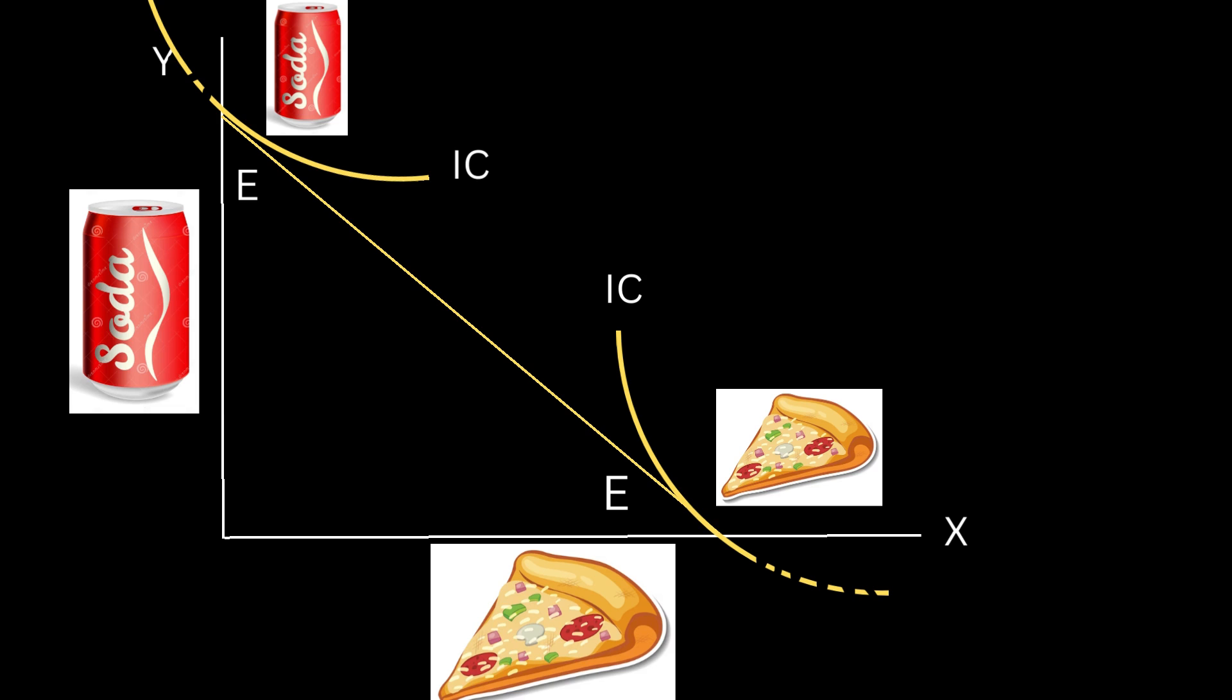For example, let's say a person has a limited budget and wants to decide between two goods, A and B. In a corner solution, they might choose to spend all of their budget on good A, completely ignoring good B. Or they might choose to spend nothing on good A and allocate their entire budget to good B. Corner solutions result in an extreme outcome rather than a balanced choice between available options.